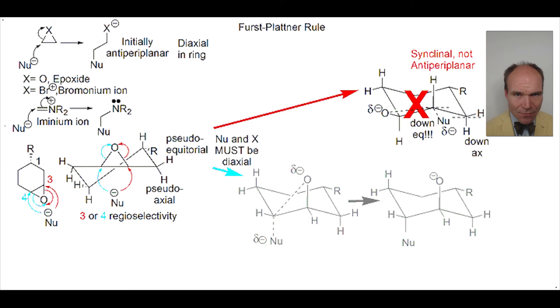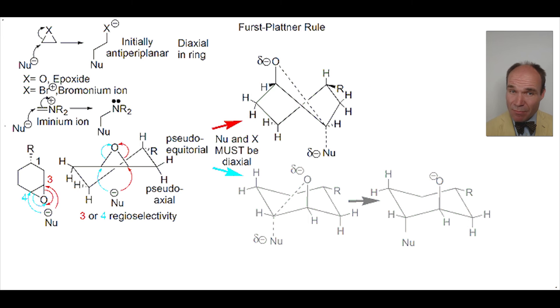So, this can't form. This regioselectivity doesn't allow optimal orbital orientation of the nucleophile to the epoxide, nor bromonium, nor iminium ions. The nucleophile approach to carbon 3 can be anti-periplanar, axial, diaxial with the ring, but not with a chair conformation. The ring has to adopt a twist-boat conformation.